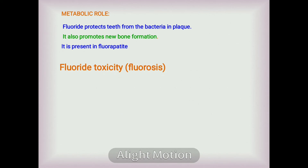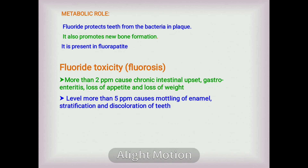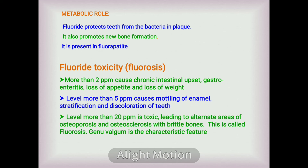Excess fluoride leads to fluorosis, which is more dangerous than caries. More than 2 ppm causes chronic intestinal upset, gastroenteritis, loss of appetite, and loss of weight. Levels more than 5 ppm causes mottling, stratification, and discoloration of teeth. Levels more than 20 ppm are toxic, leading to alternate areas of osteoporosis and osteosclerosis with brittle bones — this is called fluorosis. Genu valgum is the characteristic feature.